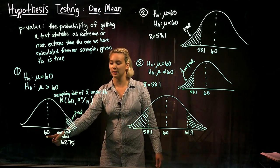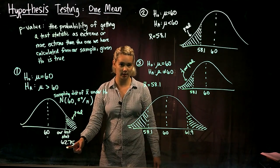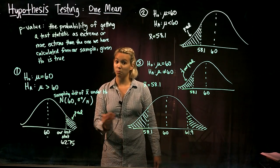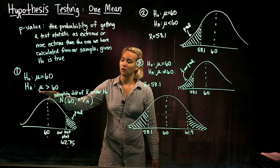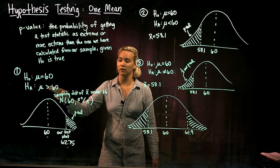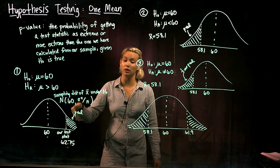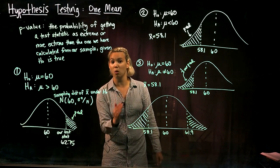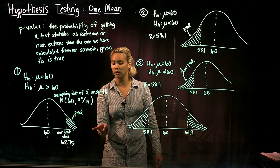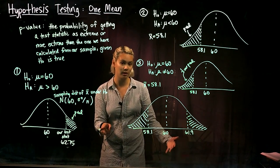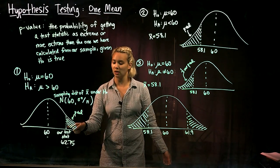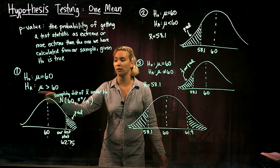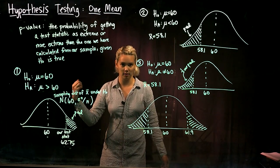So here's our normal distribution — it's centered at 60. Then we drew in our test statistic, x-bar, which was 62.75. In order to figure out which part to shade, we looked at our alternative hypothesis. Our alternative hypothesis is mu is greater than 60, so we shade everything greater than our test statistic, because that's the direction of getting more extreme. Getting larger and larger x-bars means getting more and more extreme x-bars. So we shade the area to the right of our test statistic, 62.75 — we shade that right area when our alternative says our parameter is greater than some value.